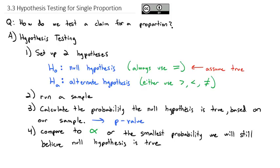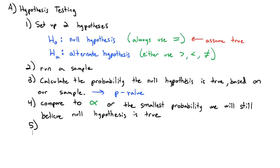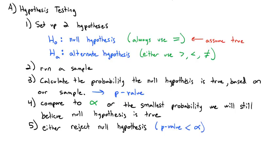Or the p-value might be bigger than alpha, meaning there is a greater probability that the null hypothesis is true, and then we won't reject it. So step five is simply either to reject the null hypothesis — we do that if the p-value is less than alpha because the probability was too small to still believe the null hypothesis — or we will fail to reject the null hypothesis.